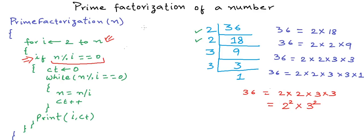Let's say 6 divides n. Now 6 is a non-prime, composite number — it has two prime factors: 2 and 3. Now if 6 can divide n at any point, then 2 and 3 can also divide n.